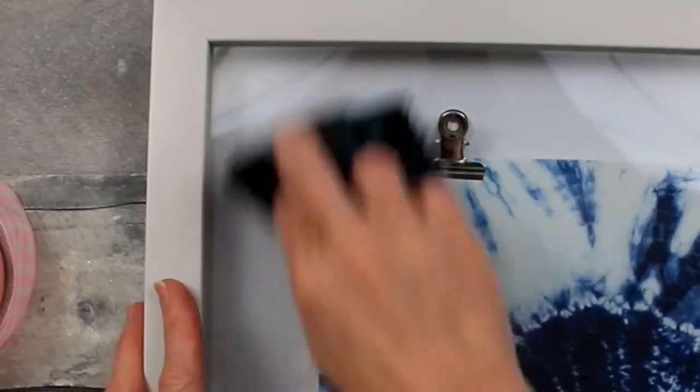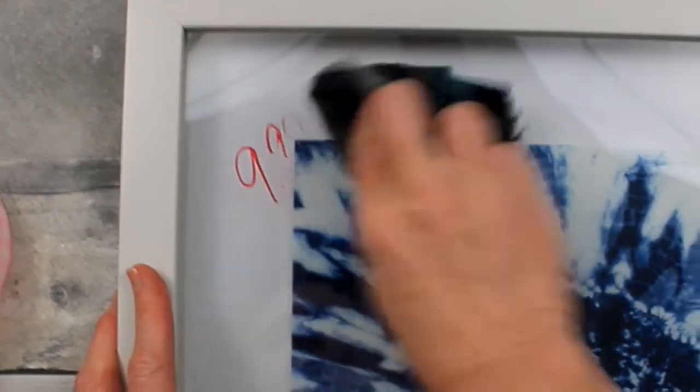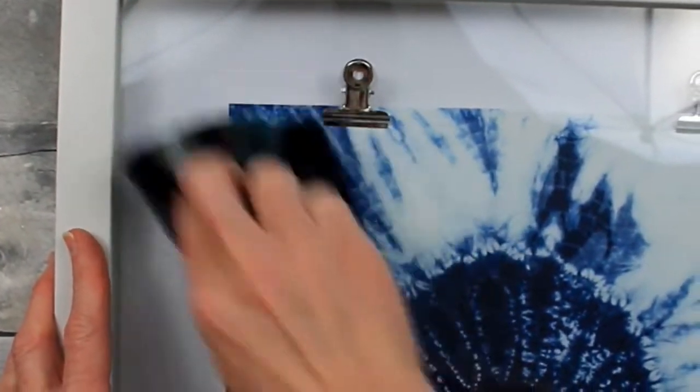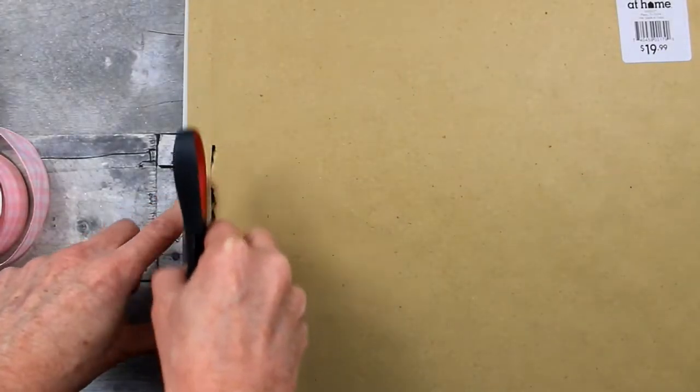So a little Goo Gone is going to take this red marker off of here. Also go back over with some alcohol or some glass spray and clean your glass up on both sides.